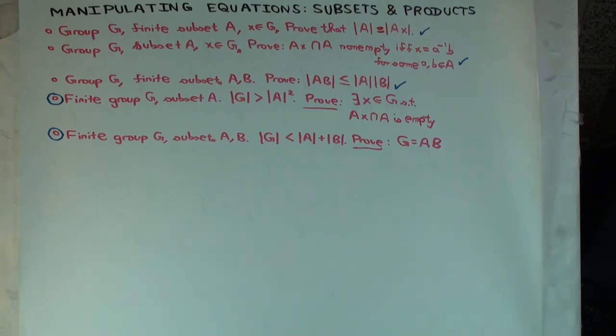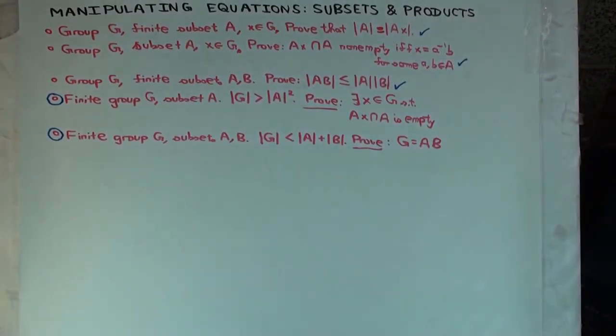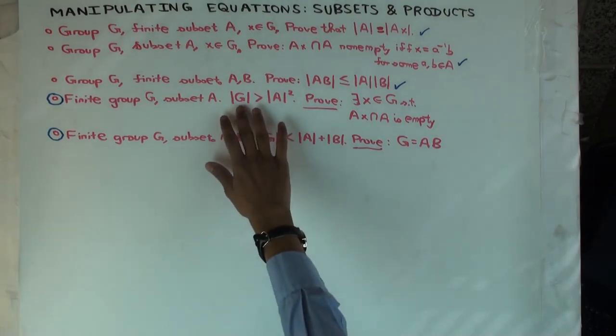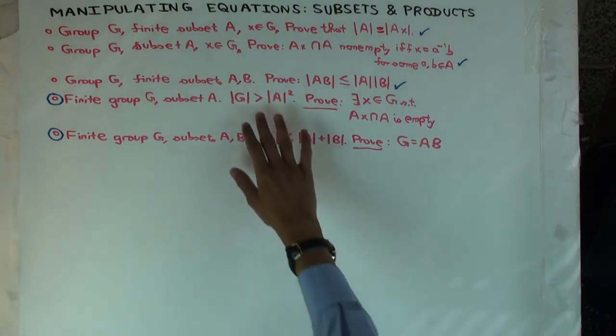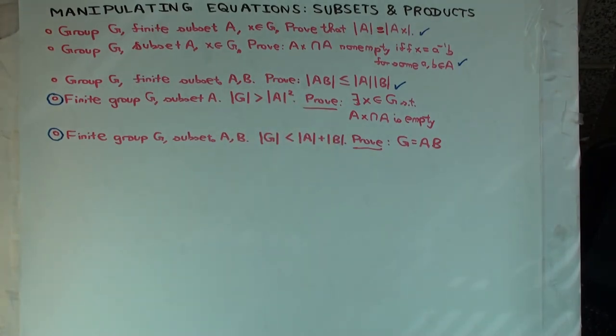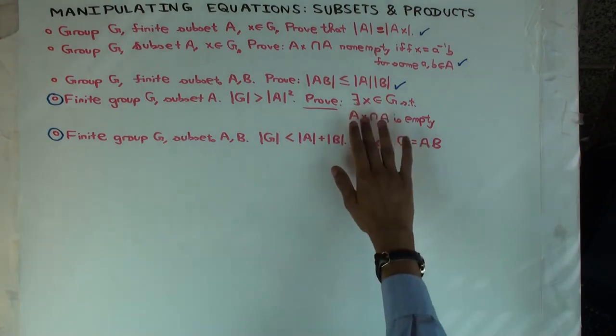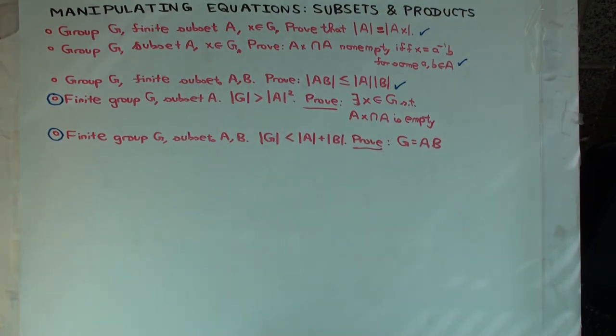Now let's do this one. Finite group G and you have a subset A, and let's say that the size of G, which by the way, if it's actually a group, the size is also called the order, is greater than the square of the size of A. What you want to prove is there exists X in G such that AX intersect A is empty. And you have to use two of the things above.